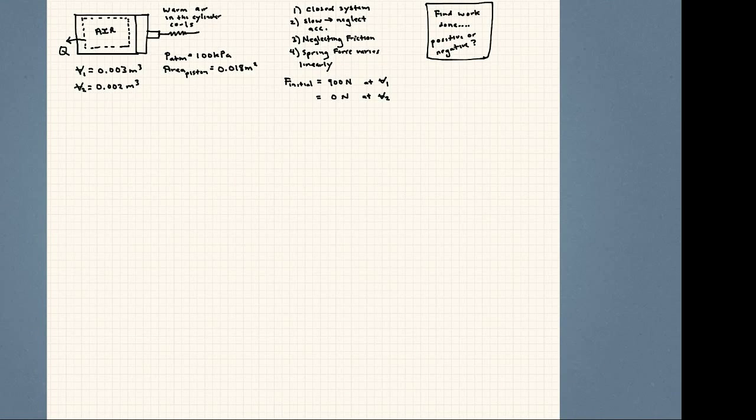Let's work another problem, at least one more from chapter three. This one's a little bit different than the other two we've worked. In this problem we have air, and the air is cooling. So we have a heat transfer out of the system. And as this air cools, this piston either moves to the left or to the right. We don't know yet.